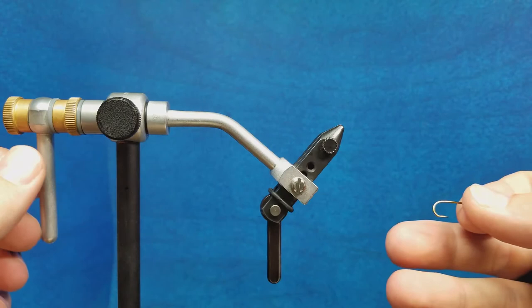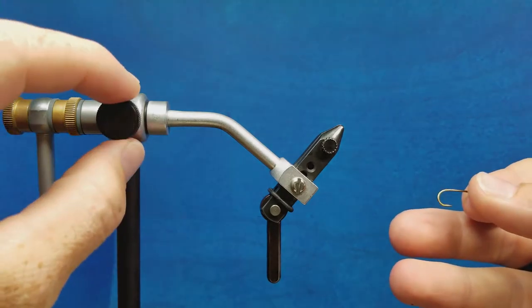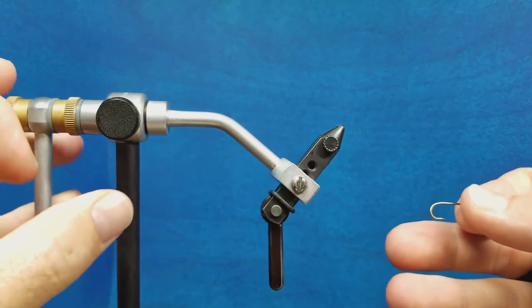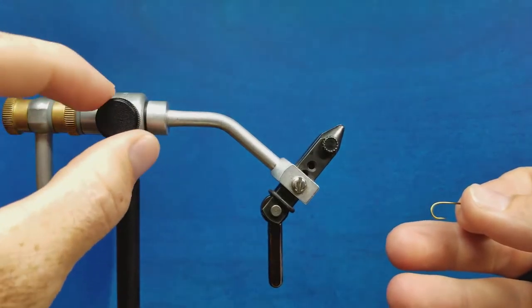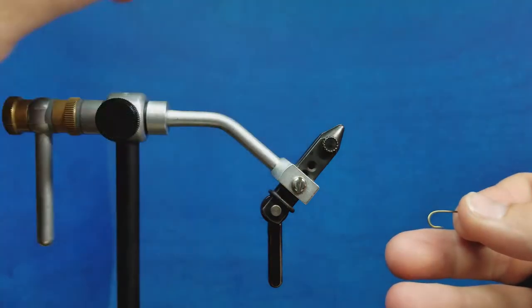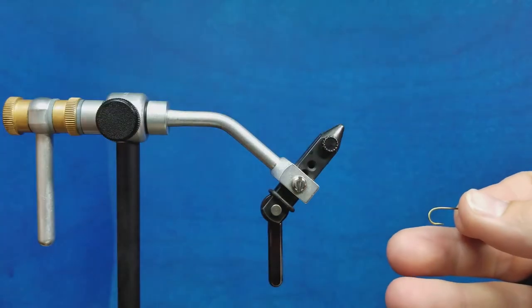The vise in front of me is a rotary vise, which means that there's a pivot point here that allows the stem to actually rotate. You may be tying on a rotary vise, you may also be tying on a stationary vise that has just a fixed stem with the jaws out here on the end, and that's fine too.